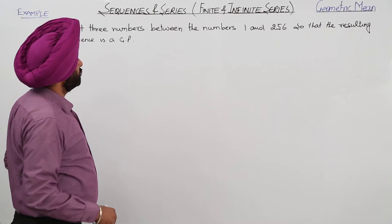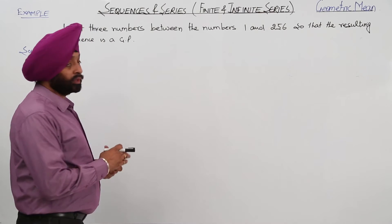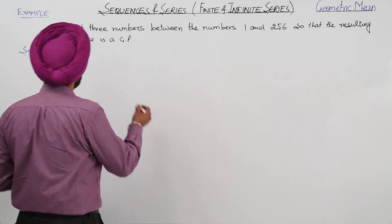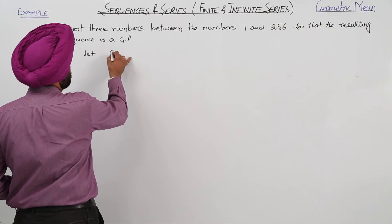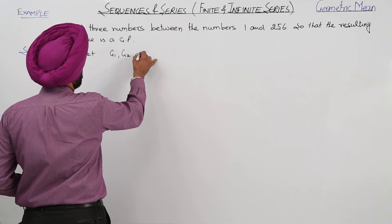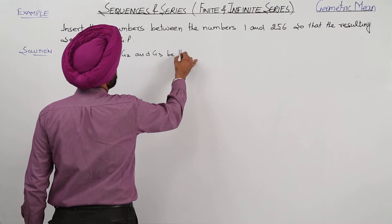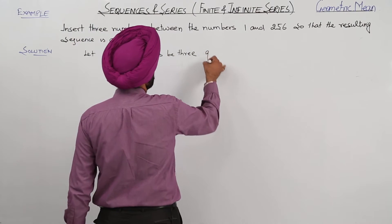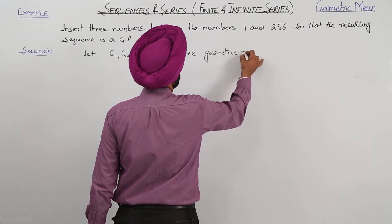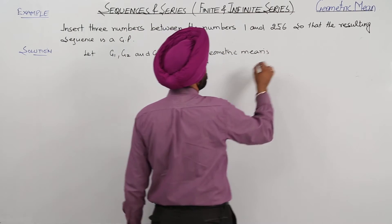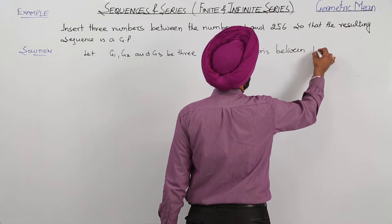Now in this example, we have to insert 3 geometric means between 1 and 256. Let G1, G2, and G3 be 3 geometric means between 1 and 256.